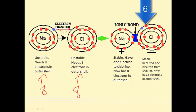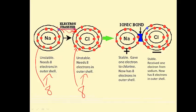They'll both end up with 8 electrons in their outer shell — with sodium, the outer shell is now the second shell, and with chlorine, the outer shell is the third shell, having gained an electron from sodium. Sodium ends up with 1 less negative charge than positive charge, giving it a net positive charge. Chlorine gains an extra negative charge, giving it a net negative charge. Both result in stable ions, and when a positive ion is near a negative ion, they attract each other and form an ionic bond.